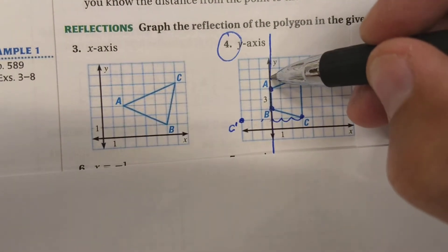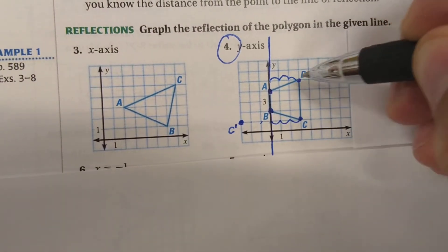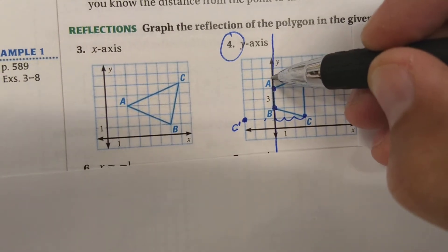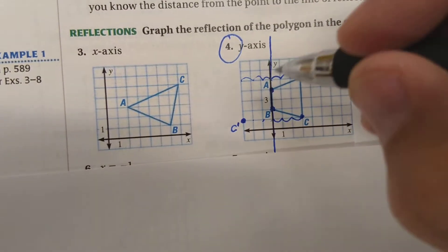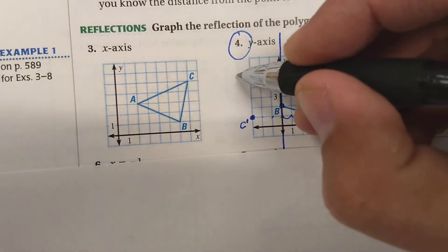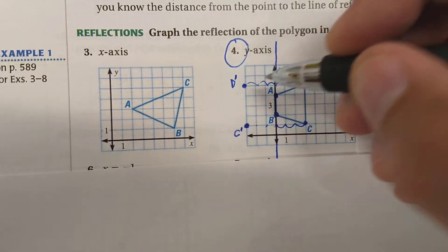The same thing happens up here for D. One, two, three units straight out to the right. So we go one, two, three units straight out to the left. That's D prime.